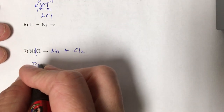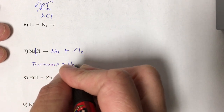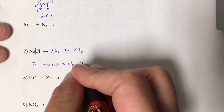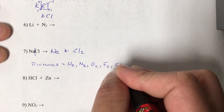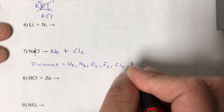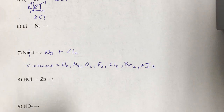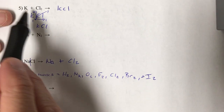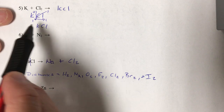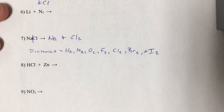The diatomics are hydrogen, nitrogen, oxygen, fluorine, chlorine, bromine, and iodine. If they are by themselves in a chemical reaction, you automatically put the 2 on it. If they're in a compound — like they were up here — you've got to do the crisscross method to figure out what to put on it. But when they're by themselves as an element, you've got to put a 2 on it.